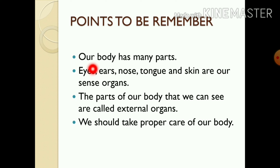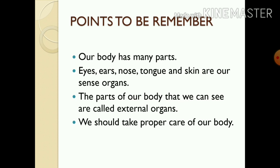Eyes, ears, nose, tongue, and skin — these are our five sense organs. The parts of our body that we can see are called external organs.